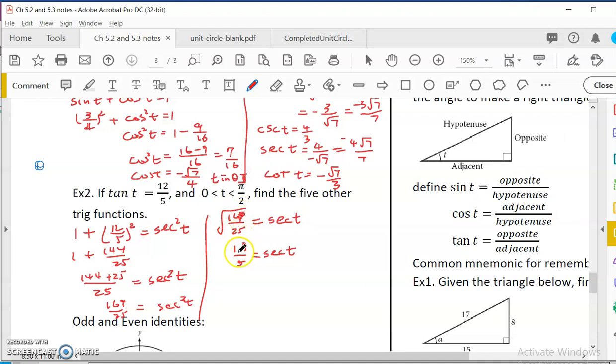169 square root is 13, 25 square root is 5. And I'd only need to do positive. Why? Because the angle is between 0 to 2 pi, which is in the first quadrant. In the first quadrant, all trig functions are positive.